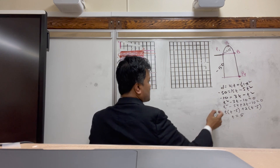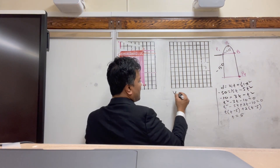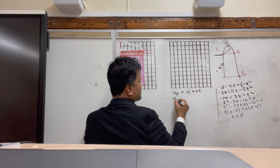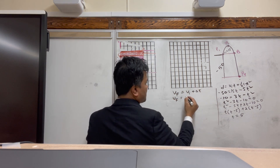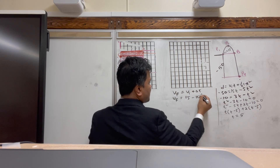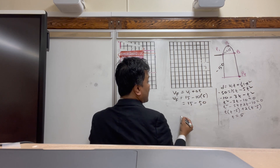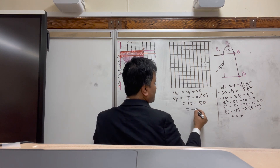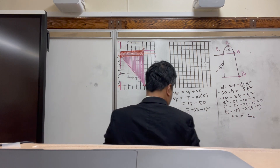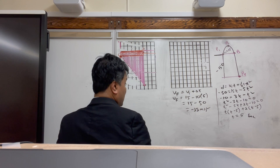With the total time of 5 seconds, find the final velocity: vf = vi + at = 15 - 10 × 5 = 15 - 50 = negative 35 meters per second.